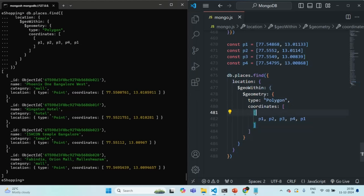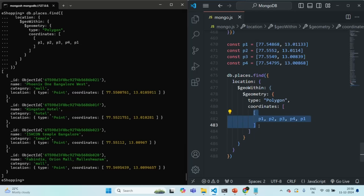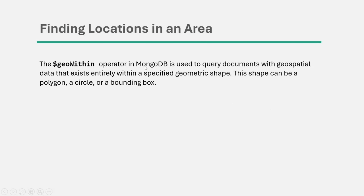So using this $geoWithin operator, we can check whether the places present in a given collection lie within a specified area. The $geoWithin operator in MongoDB is used to query documents with geospatial data that exists entirely within a specified geometric shape. This shape can be a polygon, a circle, or a bounding box.